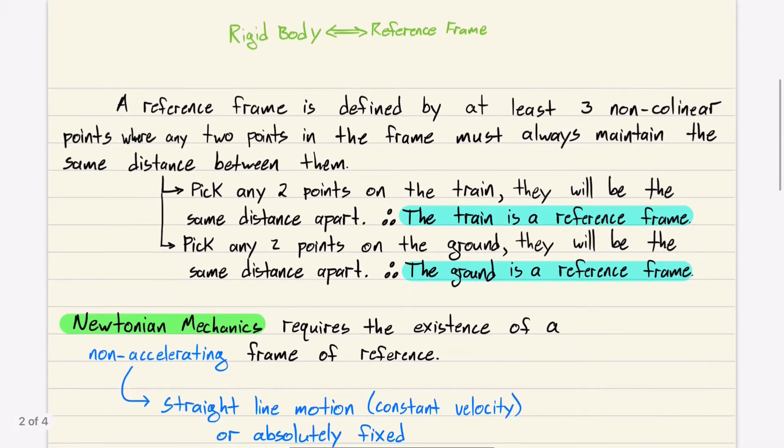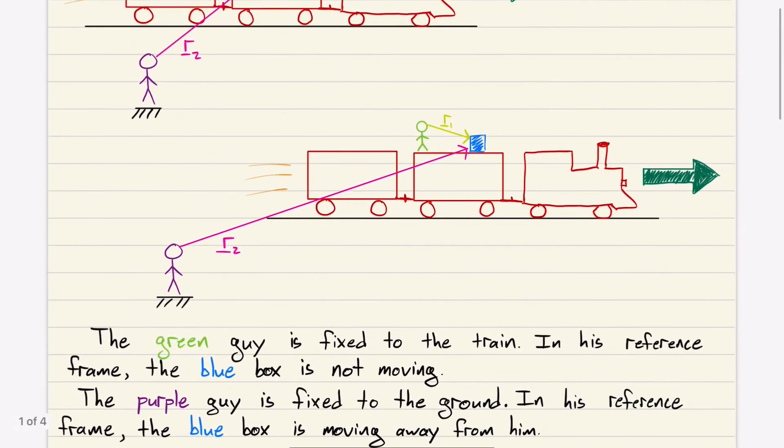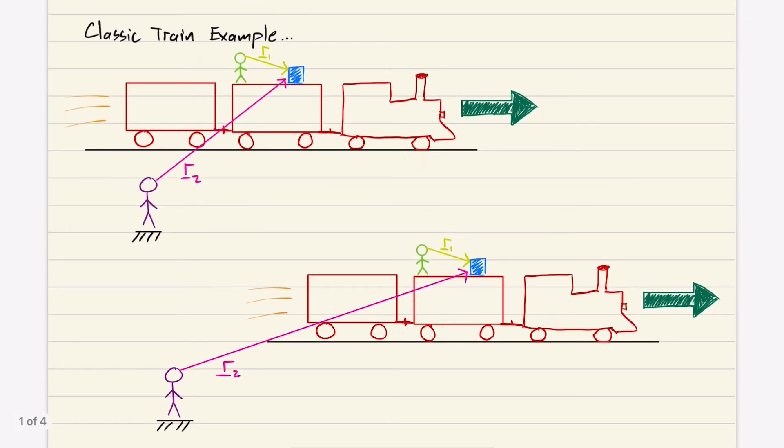A reference frame is defined by at least three non-collinear points where any two points in the reference frame must always maintain the same distance between them. Let's pick two points on the train. If the train moves some distance down the track, those two points are always going to be the same distance away from each other.